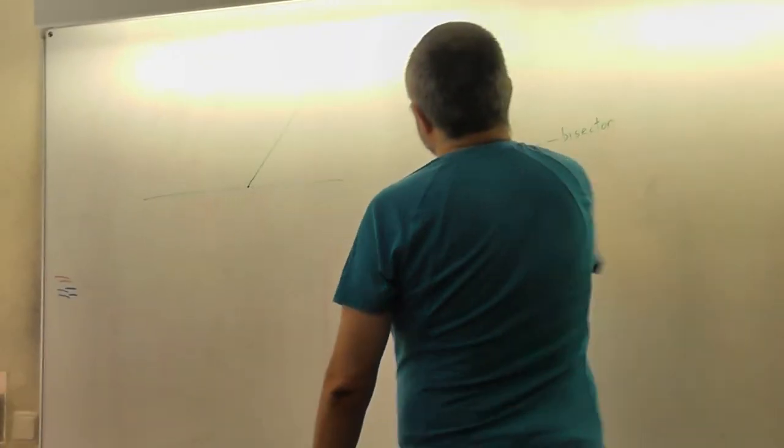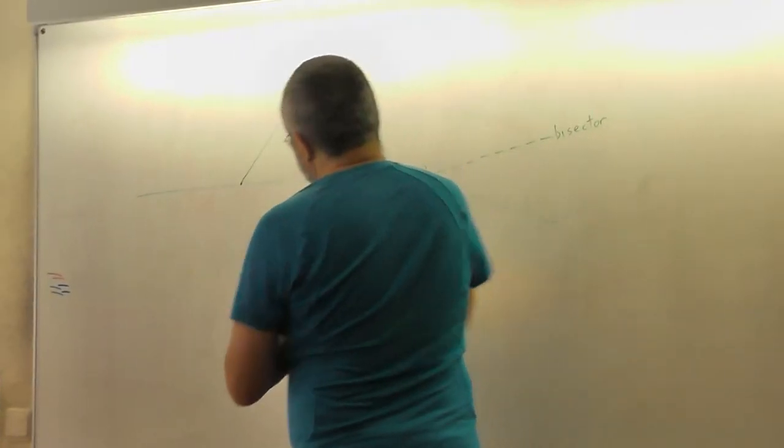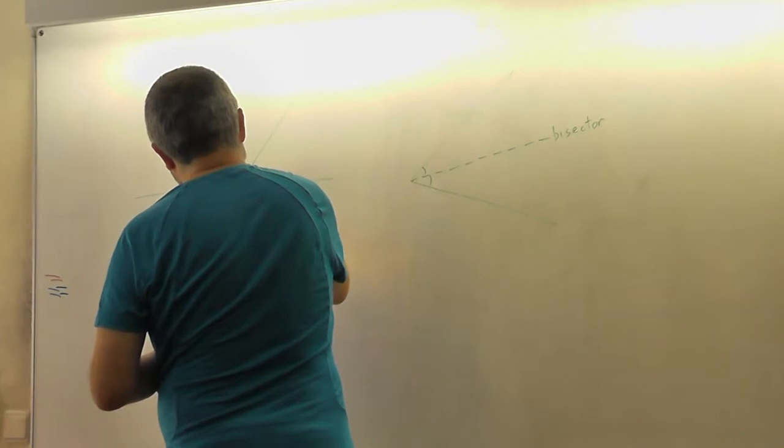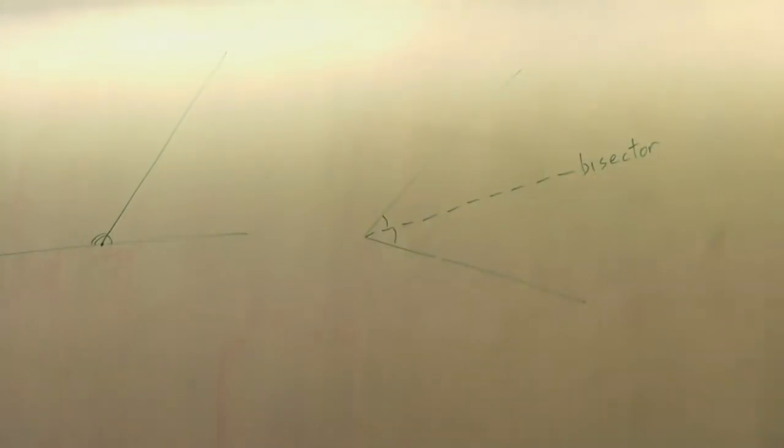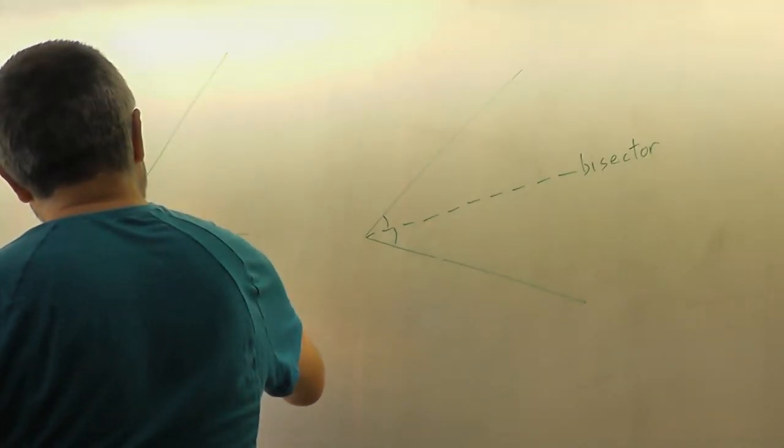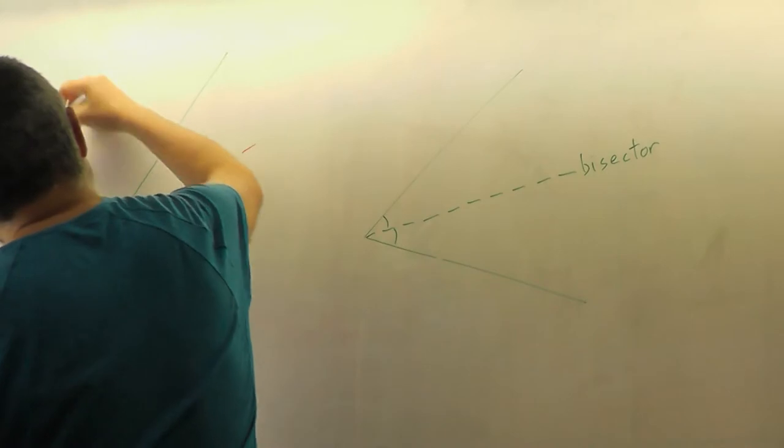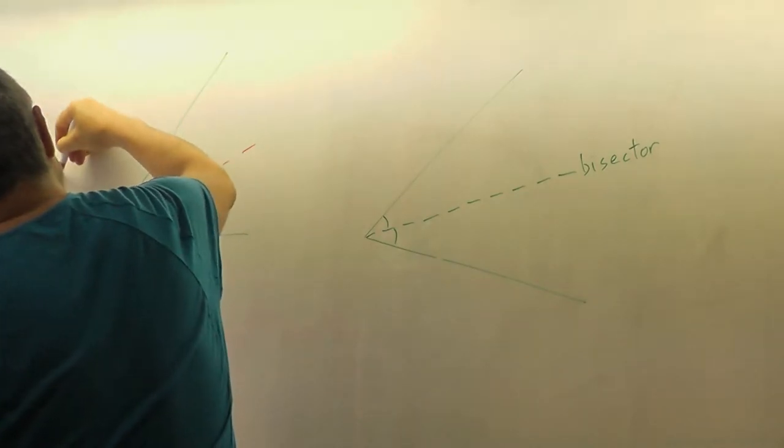So there is a problem. We have a line, and we have a ring here, and we have two angles here and there. And for each angle, we have made a bisector line, like this, and like this.